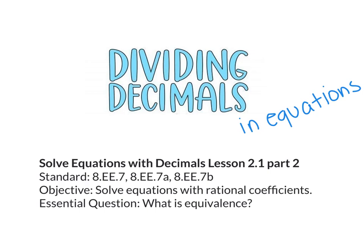Today's lesson is Solve Equations with Decimals, Lesson 2.1, Part 2. The standard is 8EE7, 8EE7A, 8EE7B. The objective is to solve equations with rational coefficients, and the essential question is: what is equivalence?